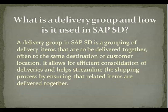What is a delivery group and how is it used in SAP S.D.? Answer: A delivery group in SAP S.D. is a grouping of delivery items that are to be delivered together, often to the same destination or customer location. It allows for efficient consolidation of deliveries and helps streamline the shipping process by ensuring that related items are delivered together.